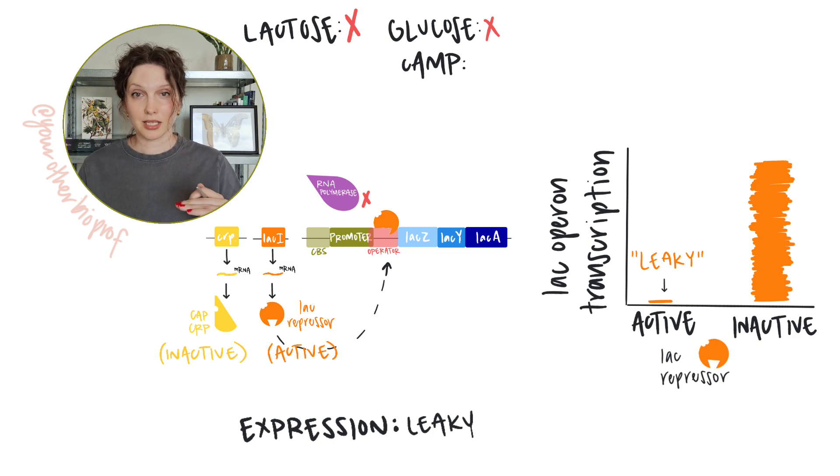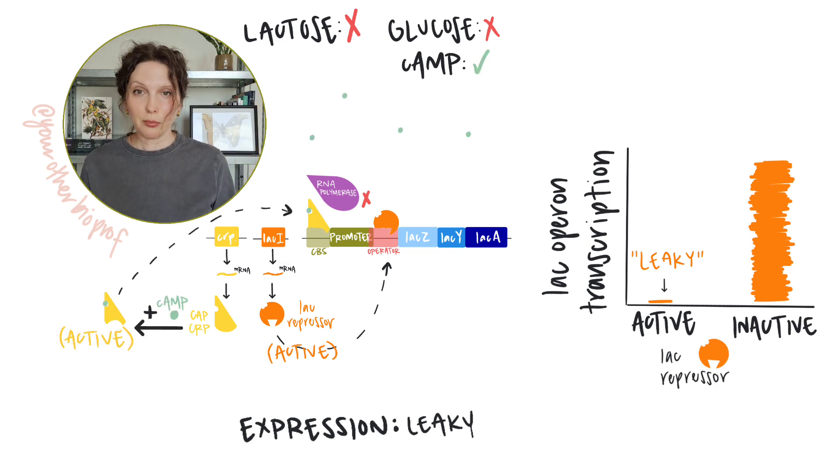What about on the glucose side of things? No glucose means plenty of cyclic AMP available to activate the CAP protein. CAP will bind to the CAP binding site and it'll give a little assist, I guess, to those rare times that RNA polymerase is able to sneak in. So maybe it's like leaky plus levels of expression, but again, still very, very low. There's not much expression to increase.